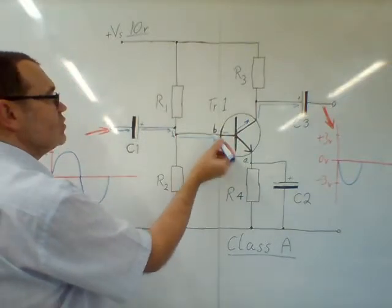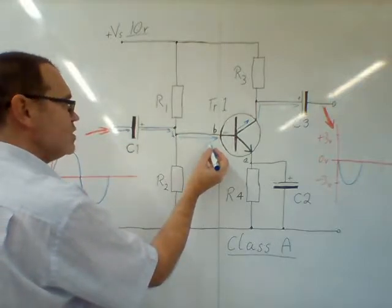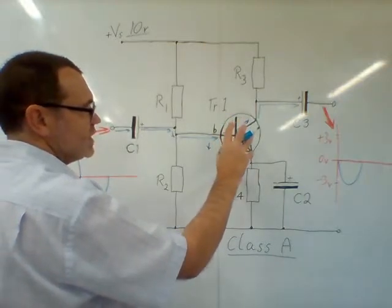The transistor of course is already on via the potential divider bias, but the voltage now at the base is going to reduce slightly. So the transistor will turn off just a little bit.